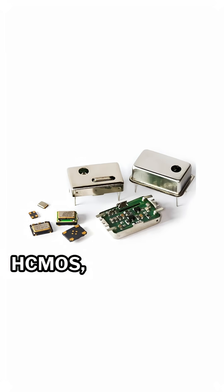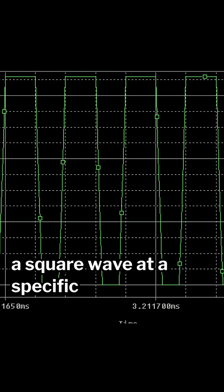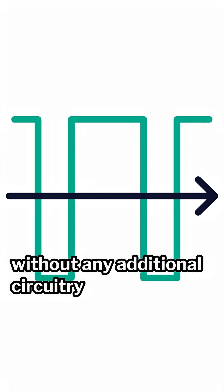Oscillator HCMOS. A crystal oscillator with the necessary circuitry to output a square wave at a specific frequency without any additional circuitry.